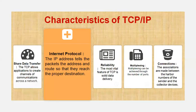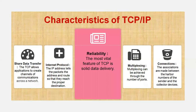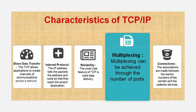The second characteristic is Internet Protocol. The IP address tells the packets the address and route so that they reach the proper destination. It includes a strategy that enables gateway computers on the internet to forward messages after checking the IP address. The third characteristic is solid data delivery — TCP must recover information that is damaged, lost, duplicated, or delivered out of order by the network layer.